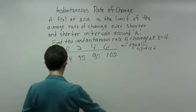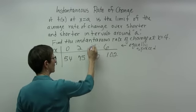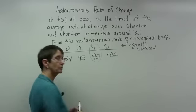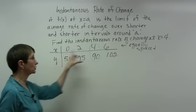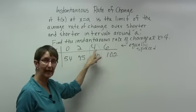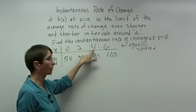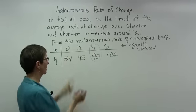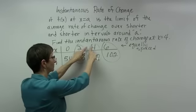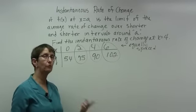I want to find the rate of change at x equal to 4. In the lessons you learn about the shortcut method, which you can use if you have equally spaced x's around the point of interest. So a is equal to 4, and I'm going to use the values at 2 and at 6 because they're both 2 units apart from 4.